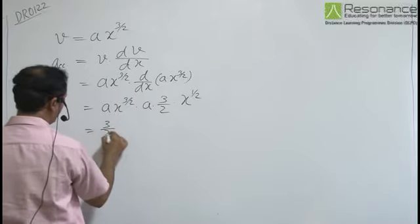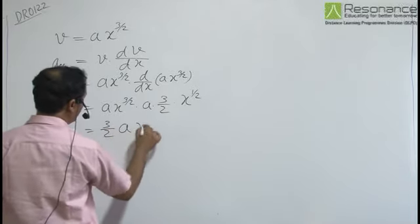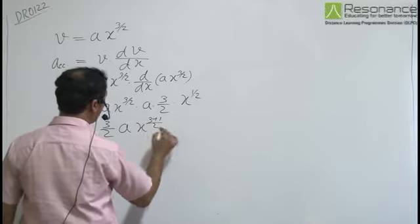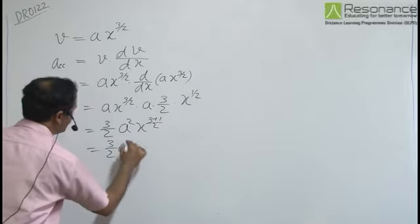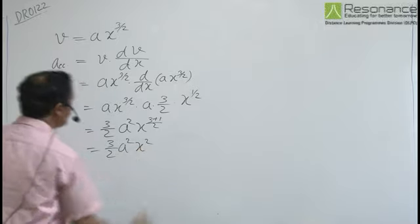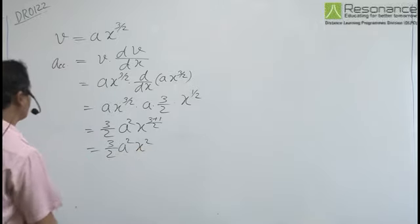That equals 3/2 A times X to the power 3/2 plus 1/2, which simplifies to 3/2 A² X². This is the acceleration.